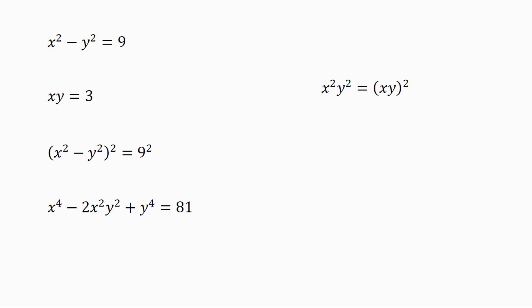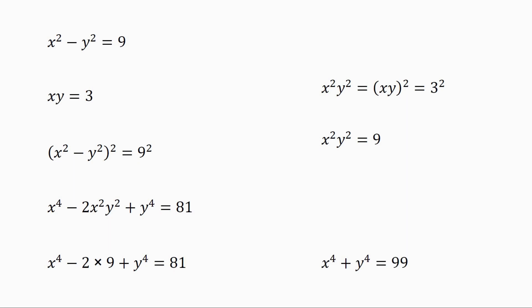We know x squared y squared equals xy whole squared, which equals 3 squared. Thus, x squared y squared equals 9. So we can write x to the power of 4 minus 2 times 9 plus y to the power of 4 equals 81. From this equation, we get x to the power of 4 plus y to the power of 4 equals 99.